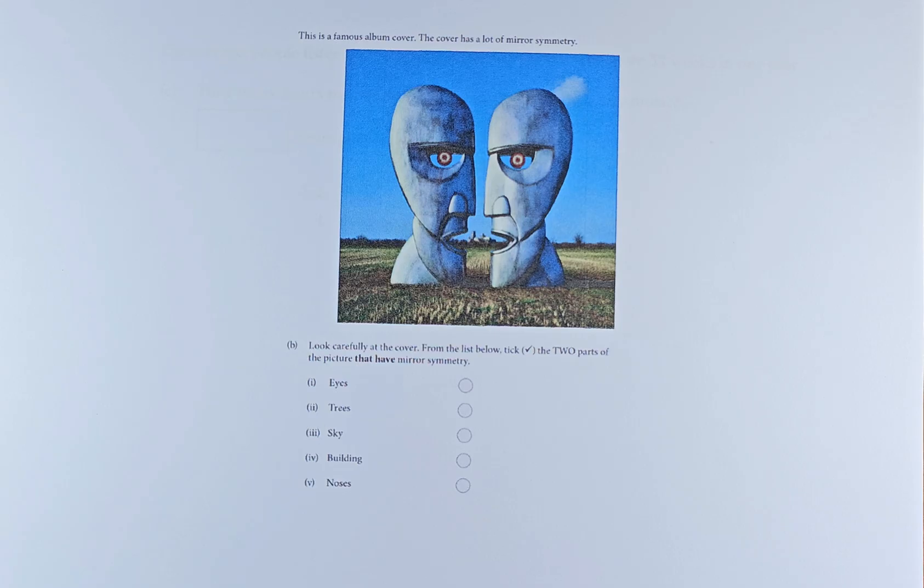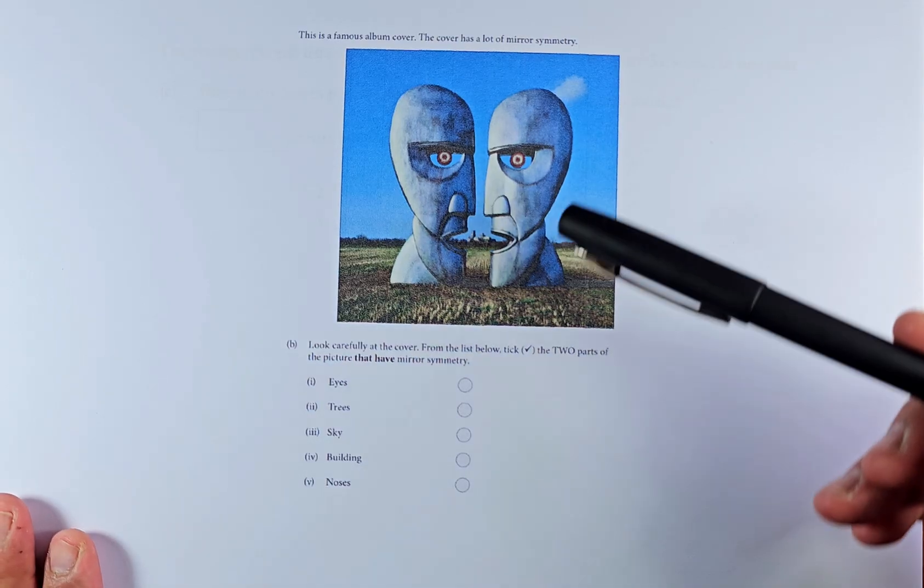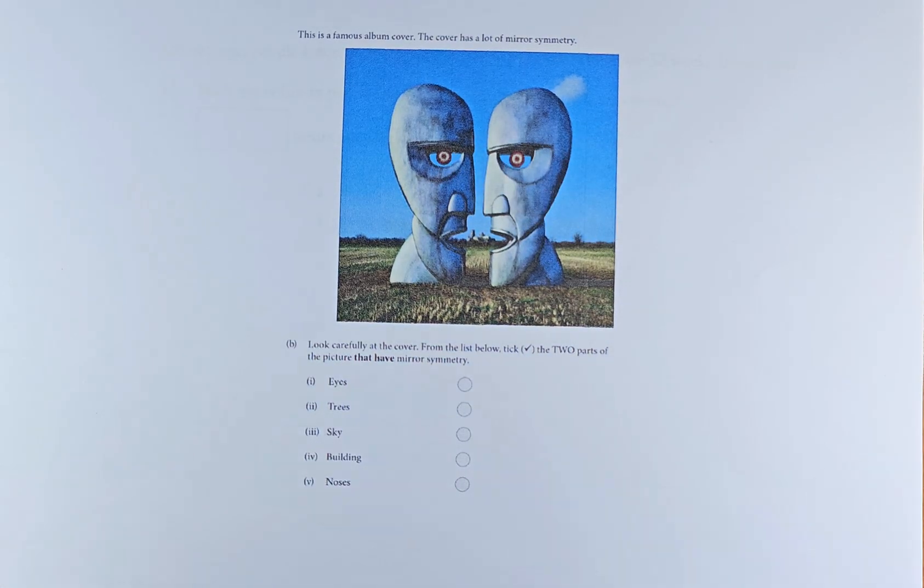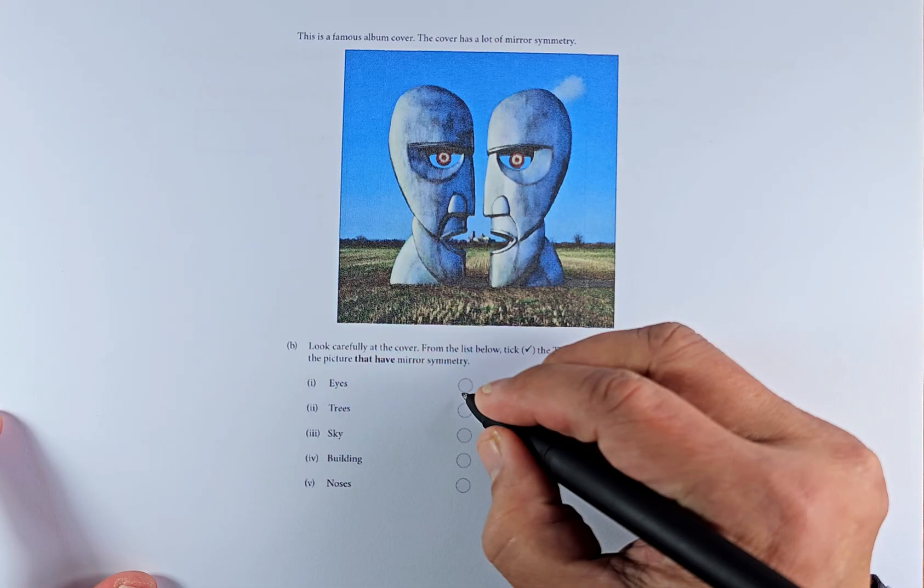Question 4B. This is a famous album cover. The cover has a lot of mirror symmetry. Look carefully at the cover. From the list below, take two parts of the picture that have mirror symmetry. It must be symmetrical. The left and the right are the same. So we look at the eyes. The eyes are symmetrical, so we can say yes, eyes are symmetrical.